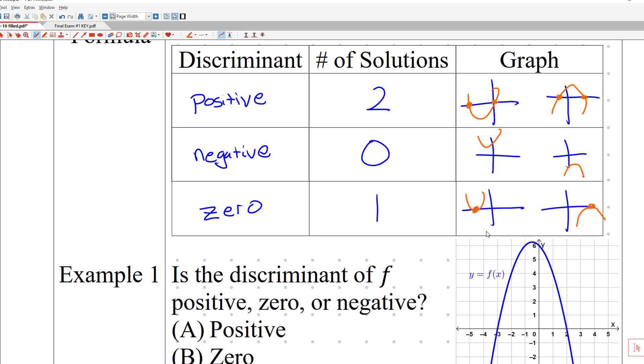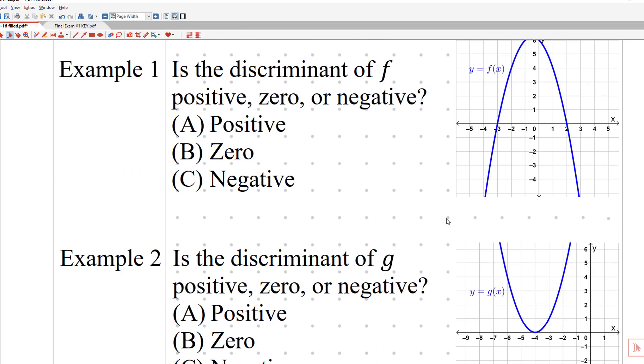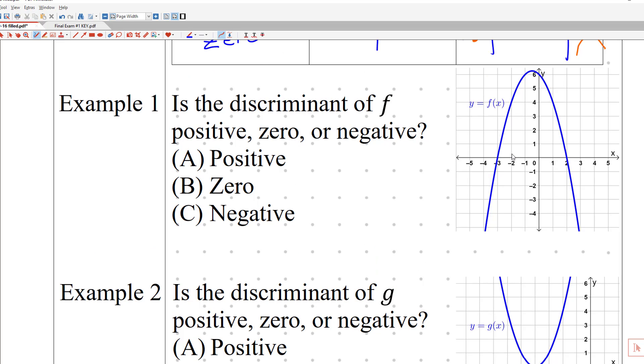Okay, so now we have all the information that we need to solve these problems. Let's try it out. In example number one, we have a graph over here. We don't have any equation. And I need to know, is the discriminant of whatever this function f(x) is, is it positive, zero, or negative? And it intersects twice, so it's positive. It's just going off of the table.